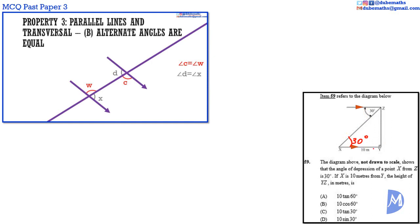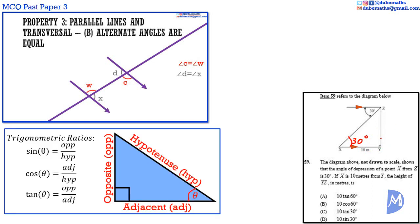In the right angle triangle XYZ, considering angle YXZ, we know that the length of the adjacent side is 10 meters and we are asked to find the length of the opposite side YZ. We can use the tangent ratio. Tan theta equals opposite over adjacent.